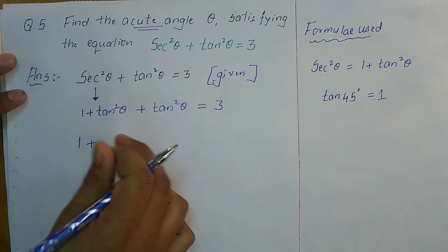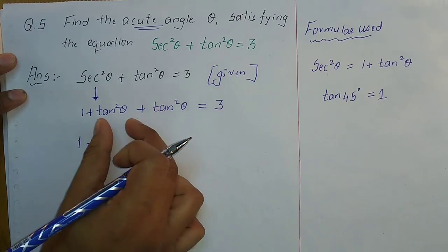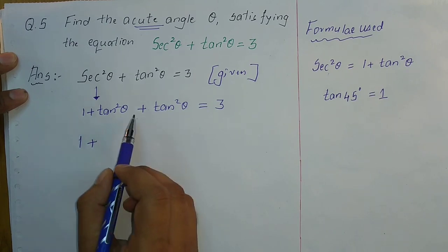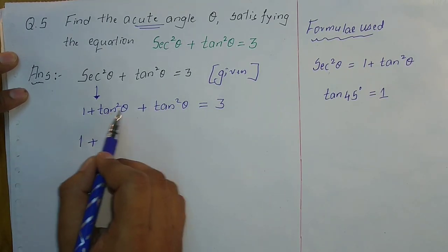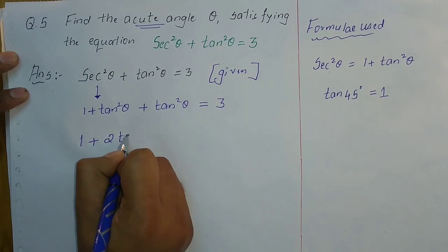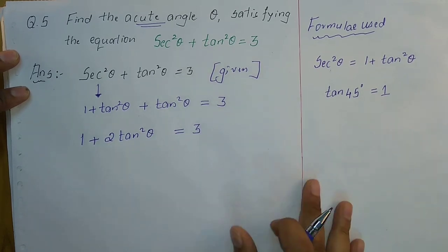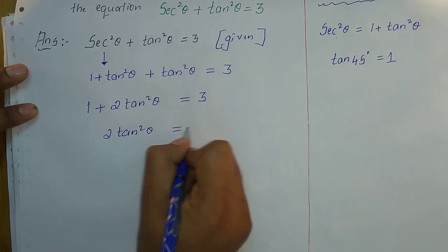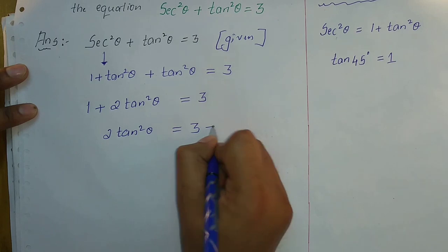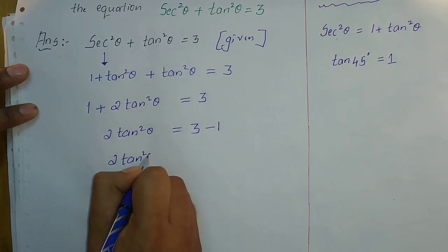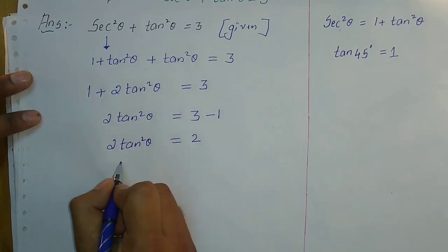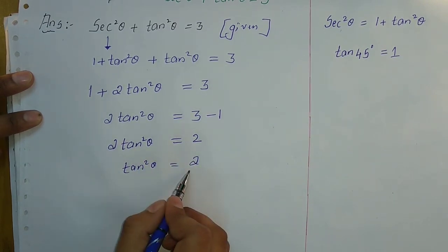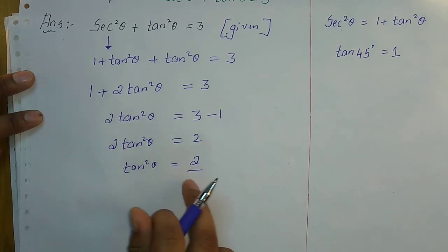Substituting sec²θ = 1 + tan²θ: we get 1 + tan²θ + tan²θ = 3. So 1 + 2tan²θ = 3. Therefore 2tan²θ = 3 - 1 = 2.